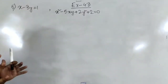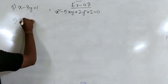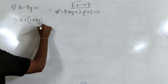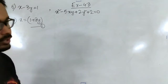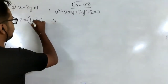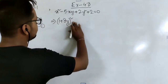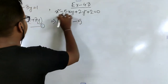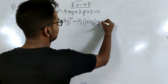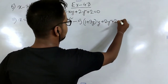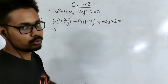The method we apply is the same. From the linear equation we find x equal to 1 plus 3y — we take this as equation 1. We put the value of x into the quadratic equation, giving (1 plus 3y) whole squared, minus 5 times (1 plus 3y), plus 2y squared plus 2 equal to 0. Let us expand and solve.